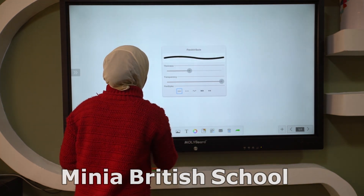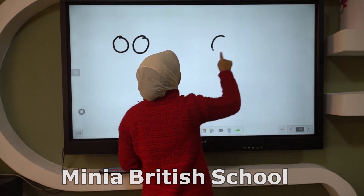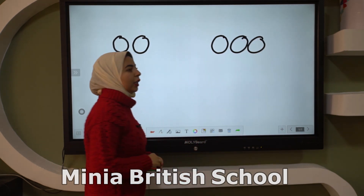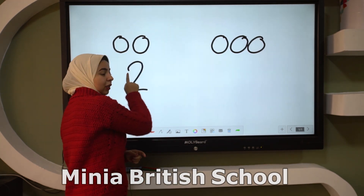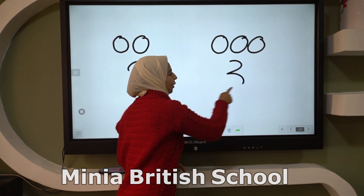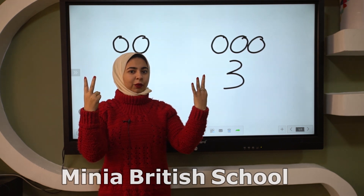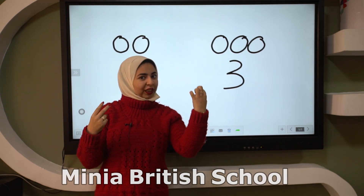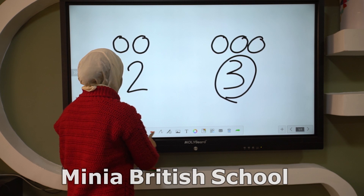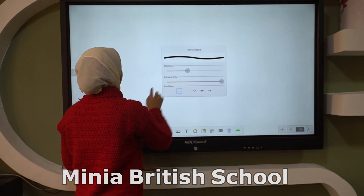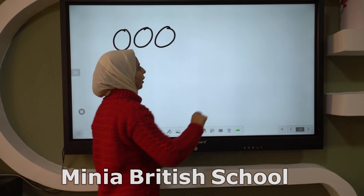Look KG — when I have two circles here and three circles here, which one is bigger? Two circles or three circles? Which one is bigger? Three is bigger than two.